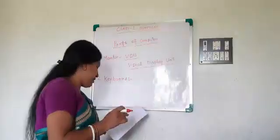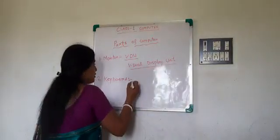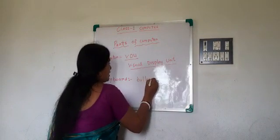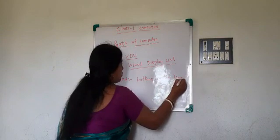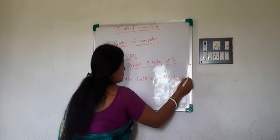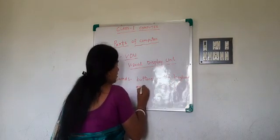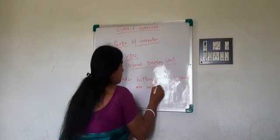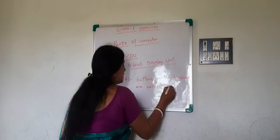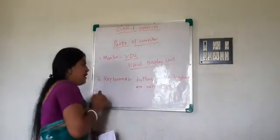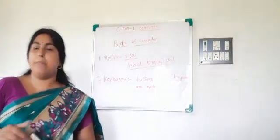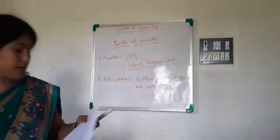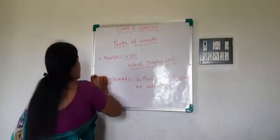It has many alphabets and buttons. The buttons on the keyboard are called keys. So keyboard is also another major part of the computer. Next is mouse.